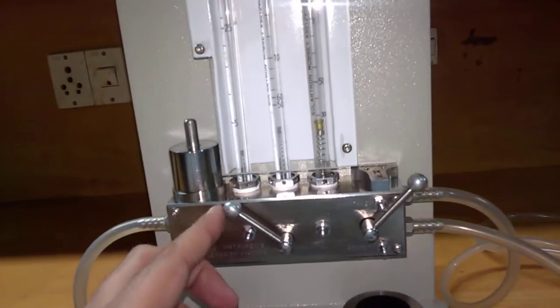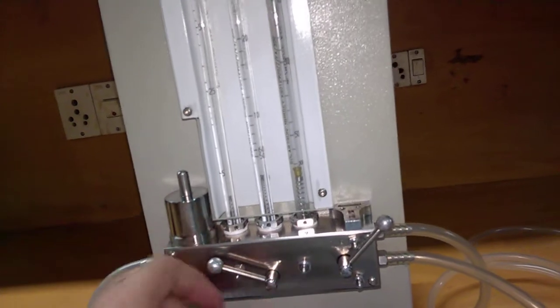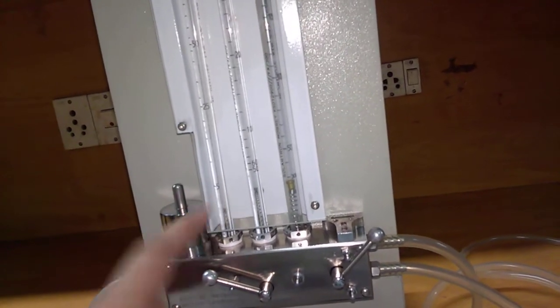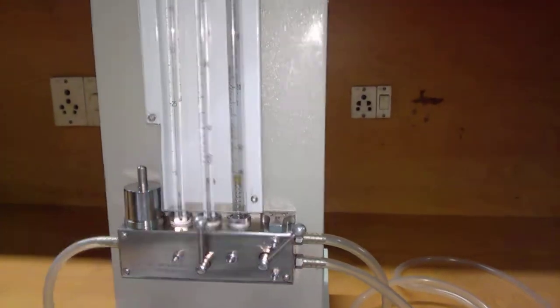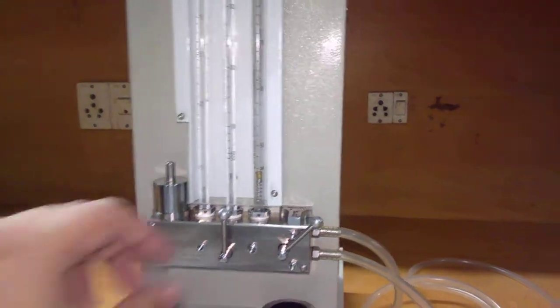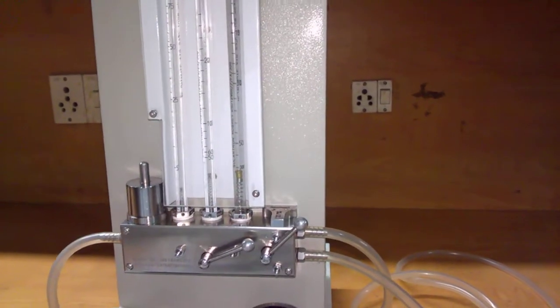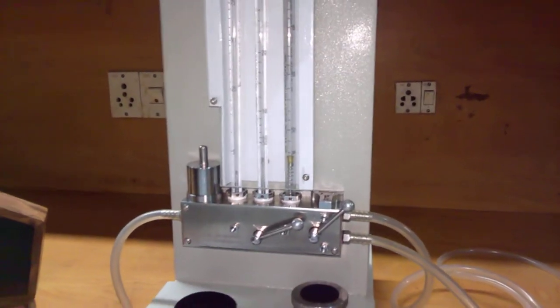The tube selector has three positions: this position selects the tube from 5 to 150 ml per minute, the middle position selects the tube from 50 to 500 ml per minute, and the rightmost position selects the tube from 300 to 3000 ml per minute.